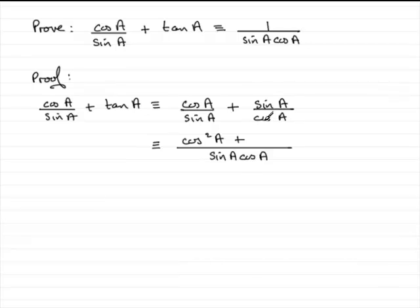Then we come on to this term here. So what do we multiply the cos A by to give sine A cos A, this denominator, clearly sine A. So I need to multiply the top of the fraction by sine A. So we get sine squared A.